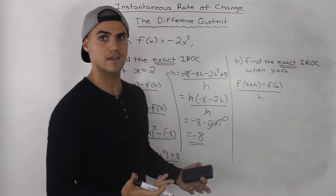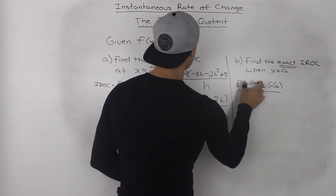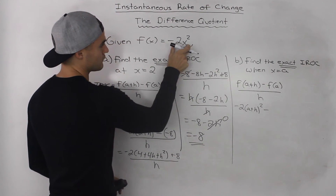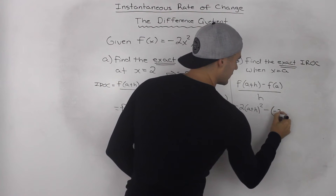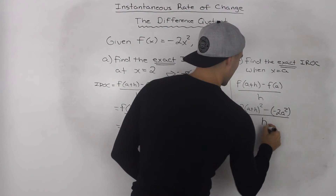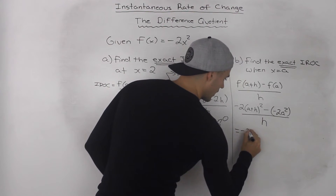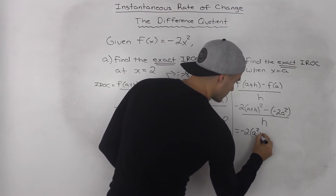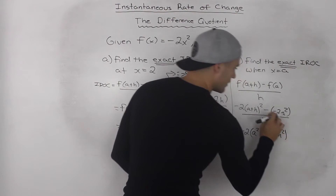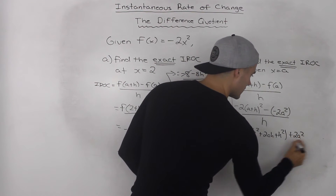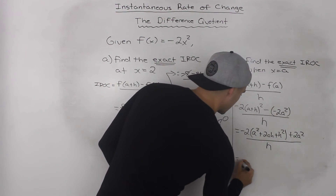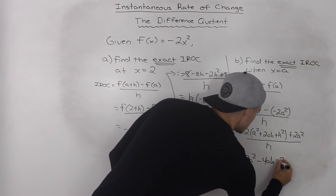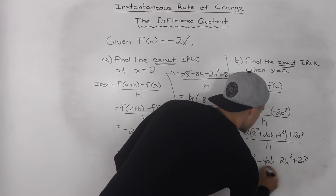Instead of plugging in a number for a, we keep a as it is. So f(a+h) plugged into our function gives -2(a+h)², minus f(a), which is -2a², all over h. We FOIL (a+h)² — (a+h)(a+h) — giving a² + 2ah + h². Then minus negative 2a² becomes positive 2a², all over h. Distributing the -2 inside the bracket: -2a² - 4ah - 2h² + 2a², all over h.